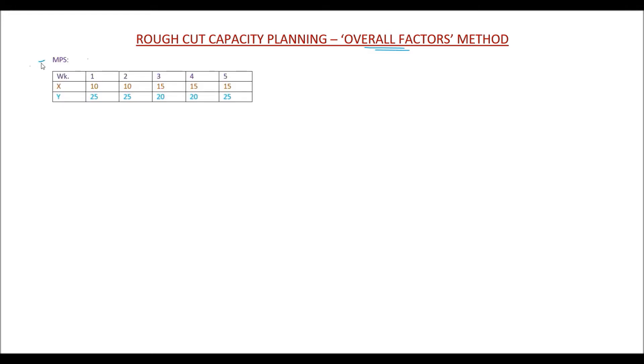Now let's consider this as our prospective MPS. There are two products on the master schedule, X and Y, and they are produced by three work centers called M1, M2, and M3.